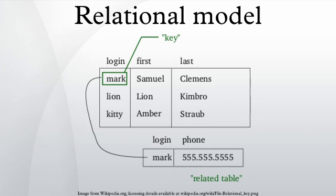The relational model for database management is a database model based on first-order predicate logic, first formulated and proposed in 1969 by Edgar F. Codd.